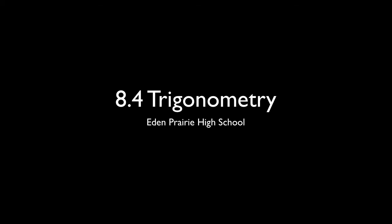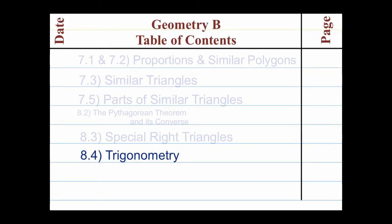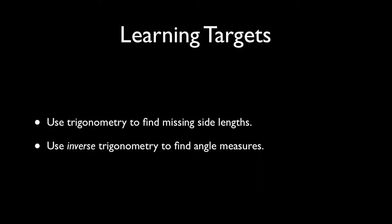Section 8.4 is all about trigonometry. We'll use trigonometry to solve problems about right triangles, and we'll use it in two ways. The first way is we'll use it to find missing side lengths of right triangles, and then secondly we'll use inverse trigonometry to find angle measures.